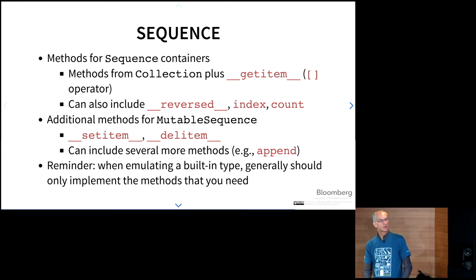So a sequence, methods for sequence containers, they are everything that a collection is plus get item, which is the square brackets. It could also include optionally reversed, index, and count. Some additional methods if you're going to have a mutable sequence. So this is like tuple versus list, is set item and del item. And then there are several more optional methods that you might need to implement. All of these are documented in the collections.abc documentation. But again, I'm going to remind you that you should only implement the minimum necessary functionality to suit your application or your use case within your application.